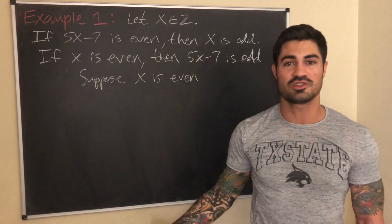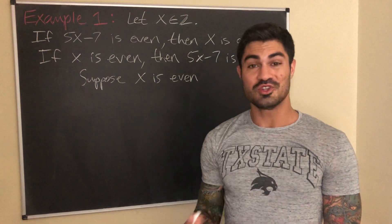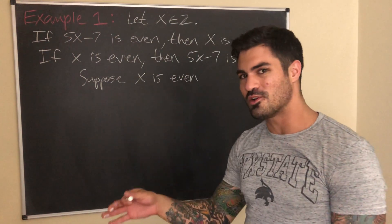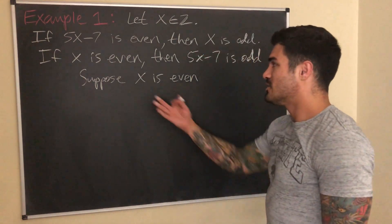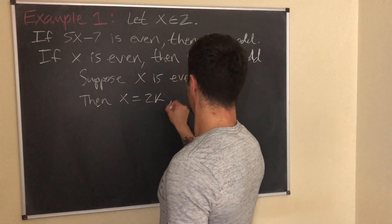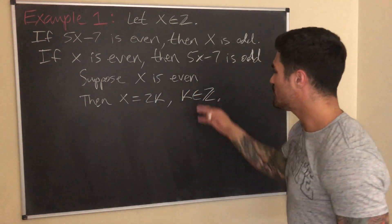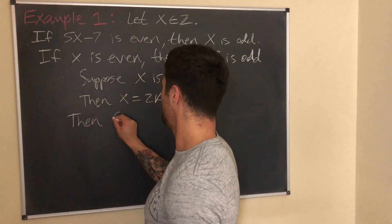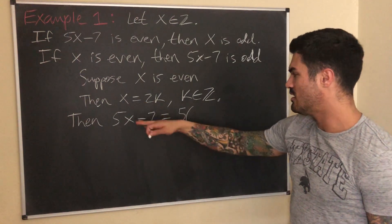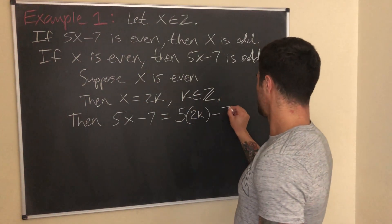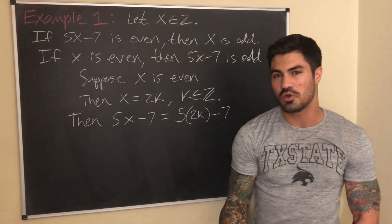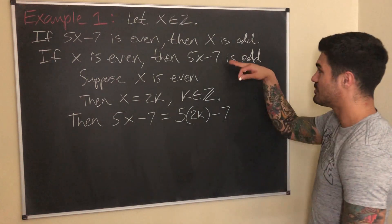From here it's really just a direct proof, but on the contrapositive of the original statement. So suppose x is even; then x equals 2k where k is some integer. We want to show 5x minus 7 is odd, meaning we want it to equal 2 times some integer plus 1. So let's compute 5x minus 7: substituting x with 2k gives us 5 times 2k minus 7, which equals 10k minus 7.